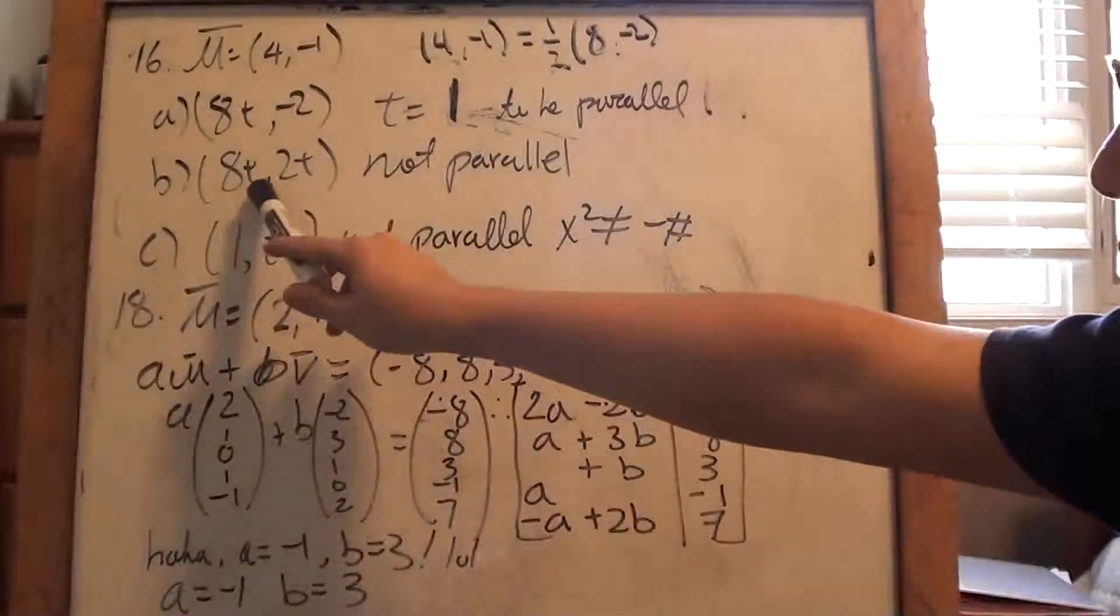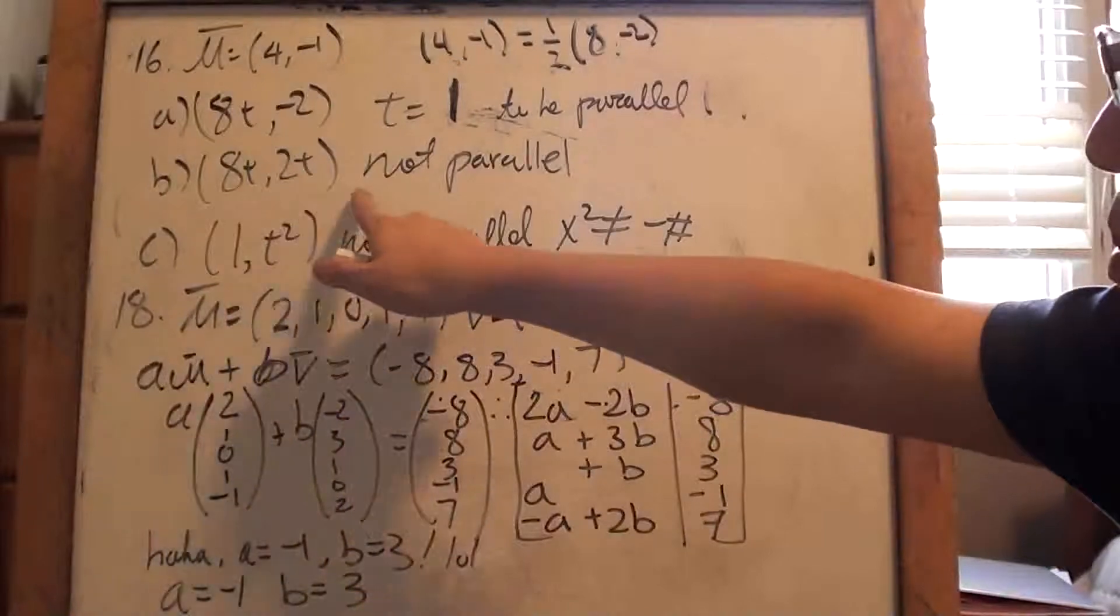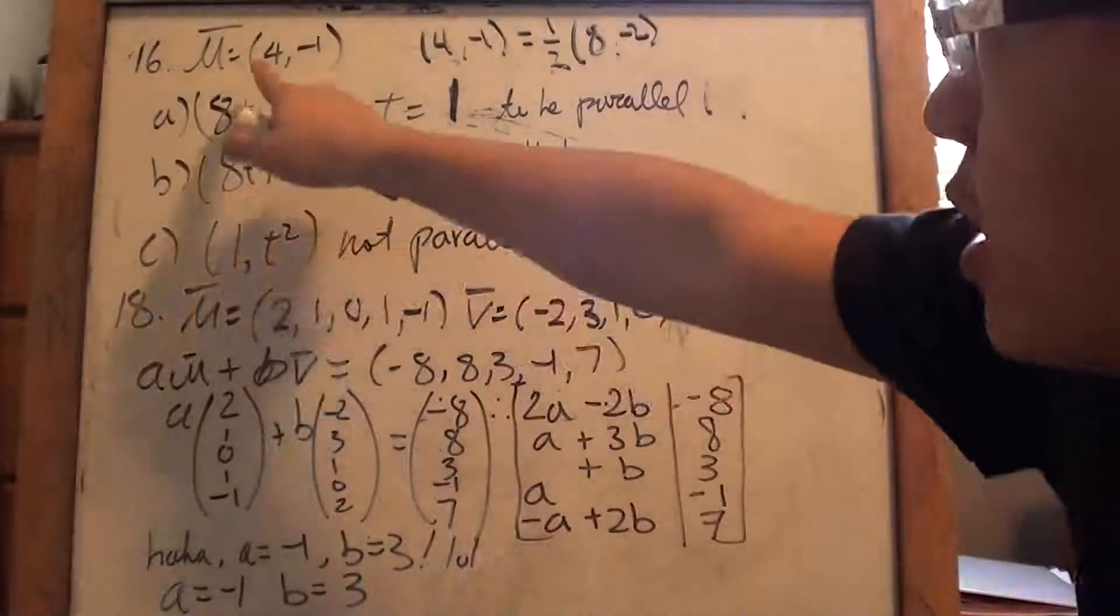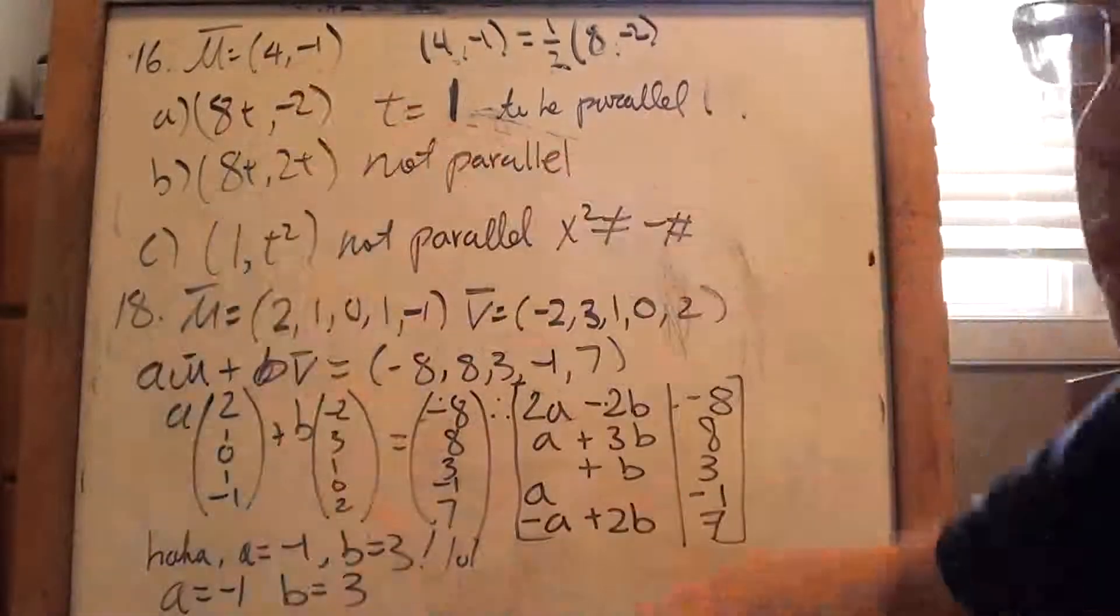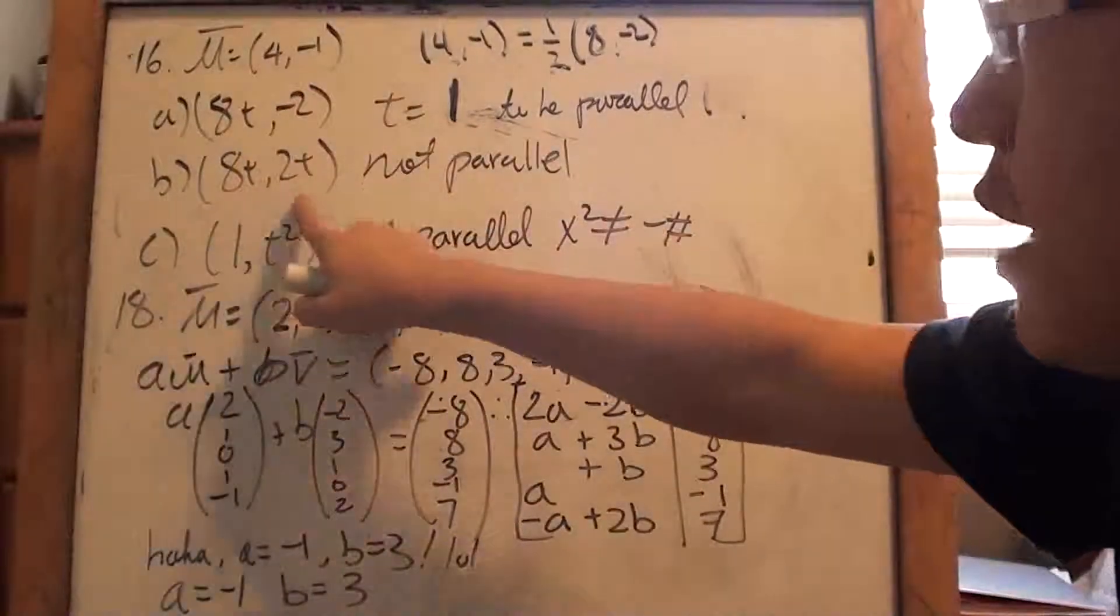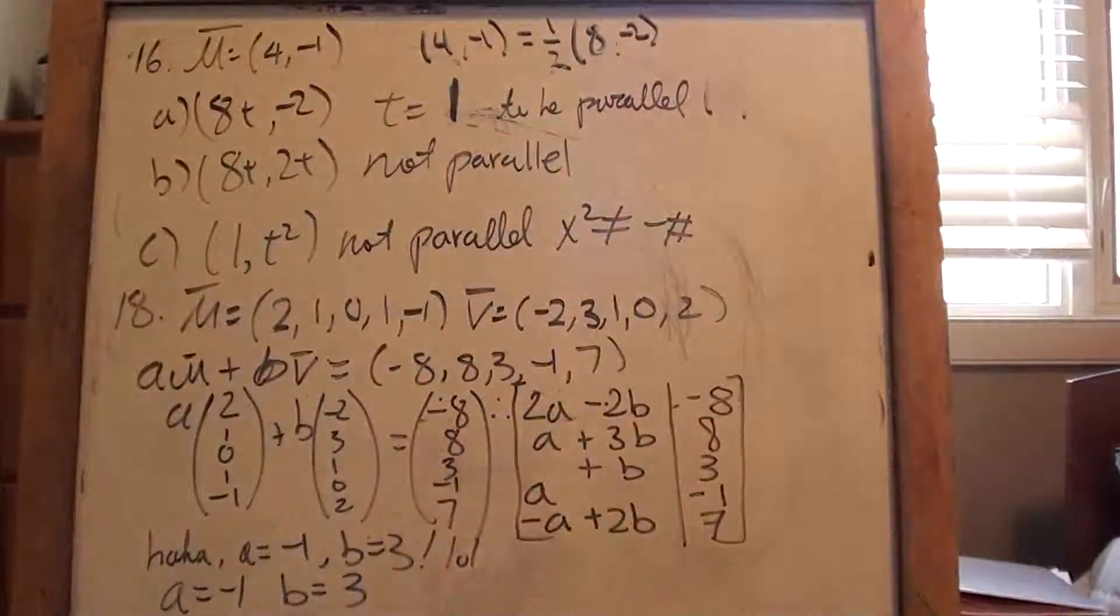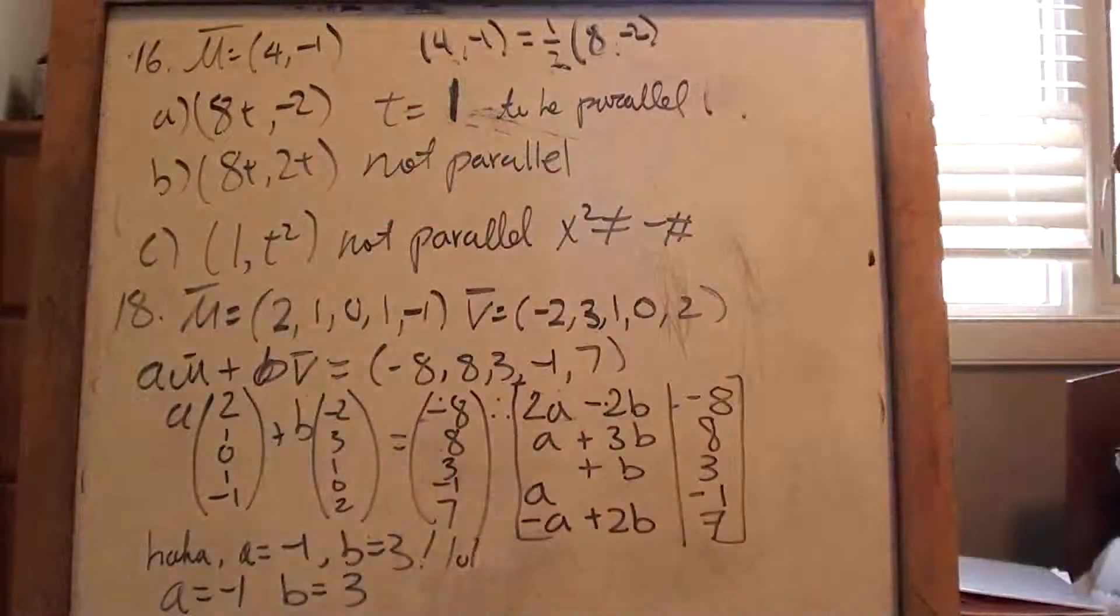Here's a problem. Whatever t you put it in, right? So let's say it was a positive t, right? Then this will stay positive, which is good. But this will also be positive. I got to have positive and negative, right? It's got to be a multiple of the original u vector, right?